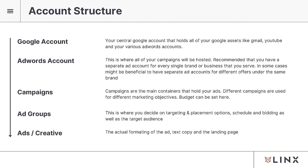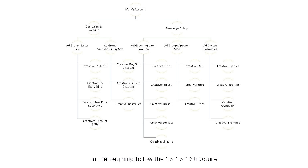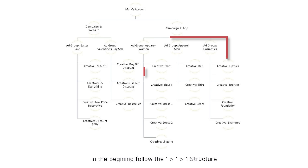To recap: you have your Google account, which holds your AdWords account. You can have multiple AdWords accounts for different brands. Within each AdWords account, you have different campaigns that hold all the different marketing objectives. Then you have the ad group, which determines the targeting, and finally the ads — the actual videos you're running. Here's a diagram that breaks down what a typical ad account might look like, with multiple ad groups and multiple creatives.